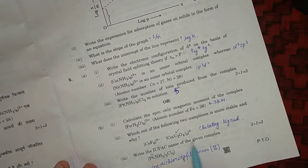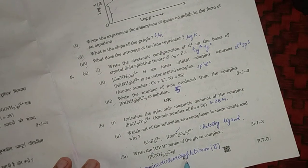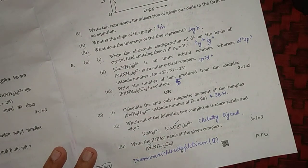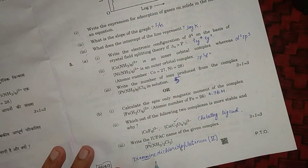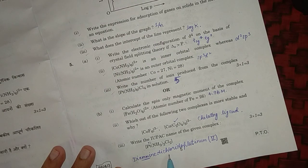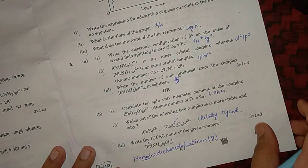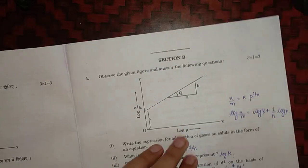Write the IUPAC name of the given complex. The IUPAC name is diamine - here double M should be there - diamine dichlorido platinum.